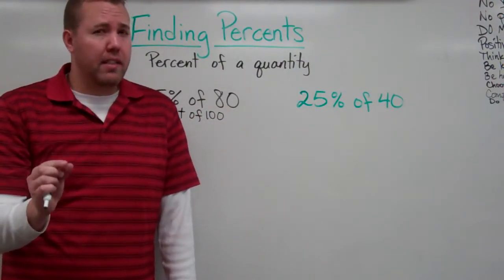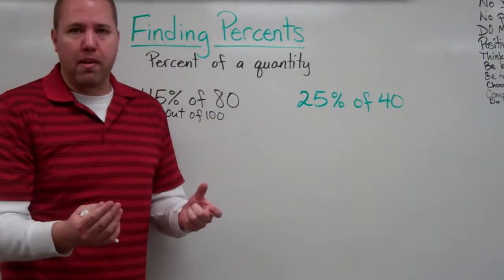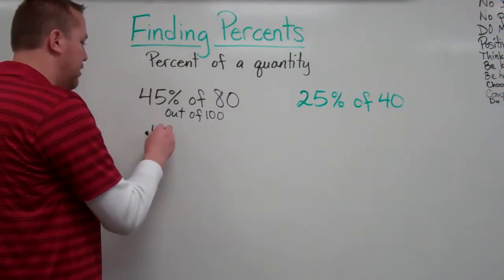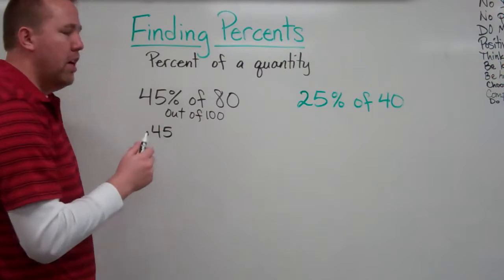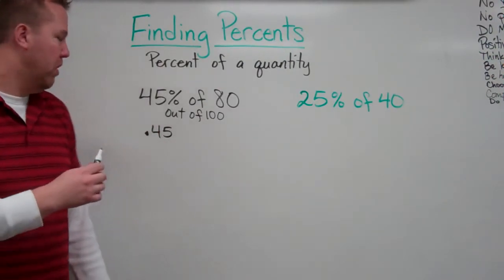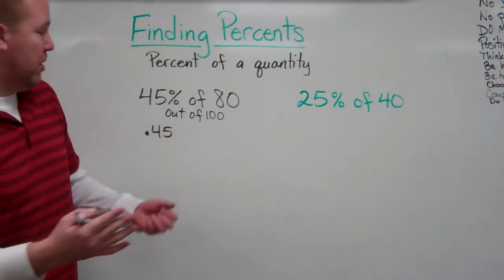We can easily transfer that to decimal form. 45 out of 100 is 45 hundredths and that looks like this. Decimal point, .45, because hundredths always have two digits after the decimal as a rule. So as we have .45, that's our decimal equivalent for percents.